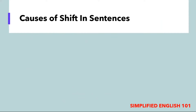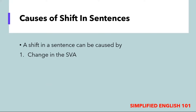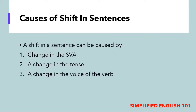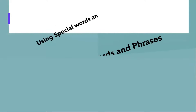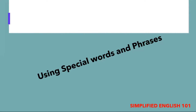Let us now recap. A shift in a sentence can be caused by: change in subject-verb agreement, change in tense, change in voice, change in point of view, and change in number. Now let us look at some special cases — words and phrases that can cause a shift in a sentence.